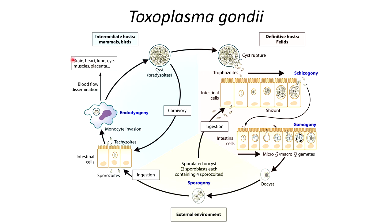Once they reach sites away from the intestines, they form cysts. The form inside the cysts is referred to as bradyzoites. This cycle repeats when another mammal eats undercooked meat and ingests tissue cysts — the bradyzoites transform back into tachyzoites once they reach the intestinal cells. If an intermediate host gets eaten by a cat, the cysts will rupture and transform into trophozoites instead of tachyzoites, and that's when the cycle repeats inside the cat.